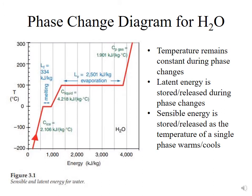Here we have a phase change diagram for water. On the x-axis, we have energy in kilojoules per kilogram, and on the y-axis, we have temperature in degrees Celsius. Starting off on the extreme left at a very cold temperature — minus 200 degrees Celsius — the water will clearly be ice. If we add energy to the substance, it will cause the ice to warm up, and it will continue to warm up until it reaches the melting point at zero degrees Celsius.